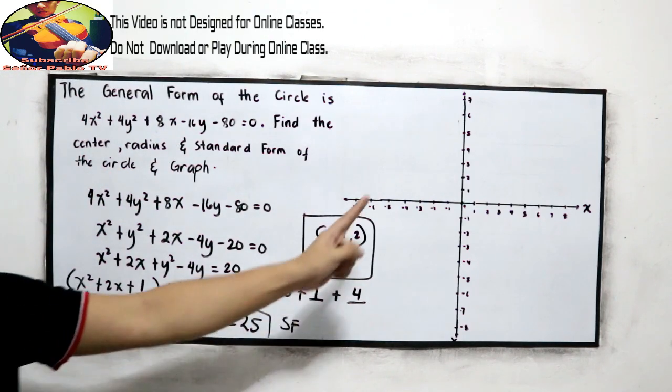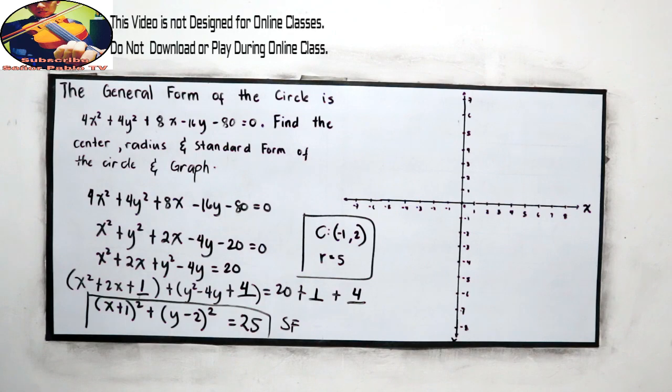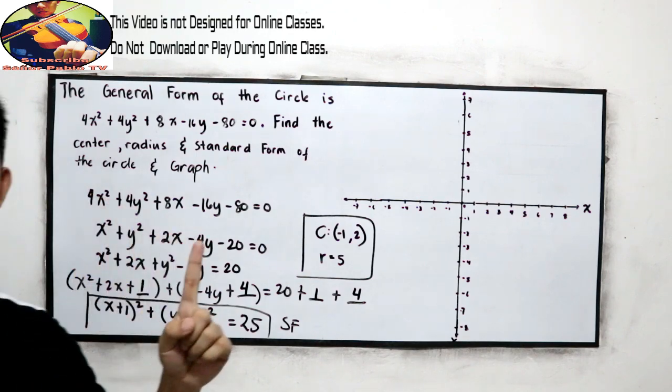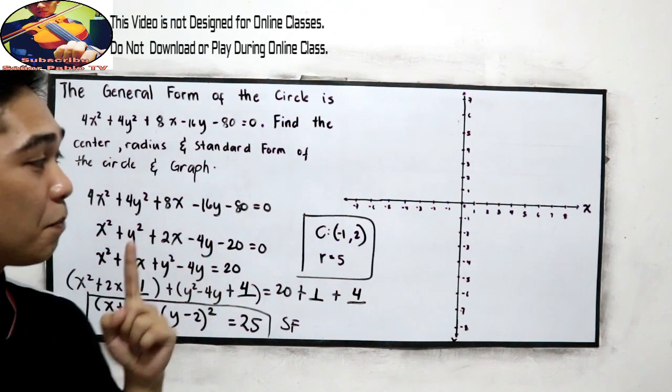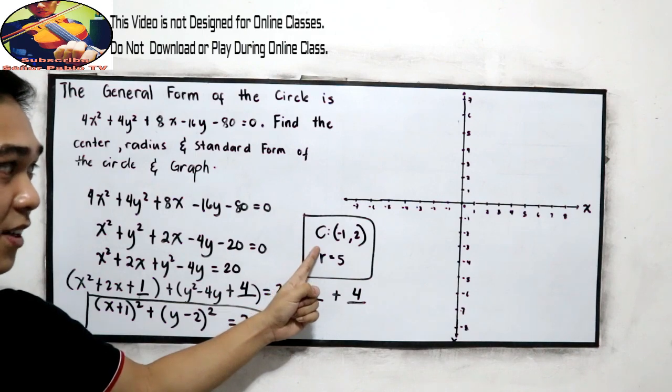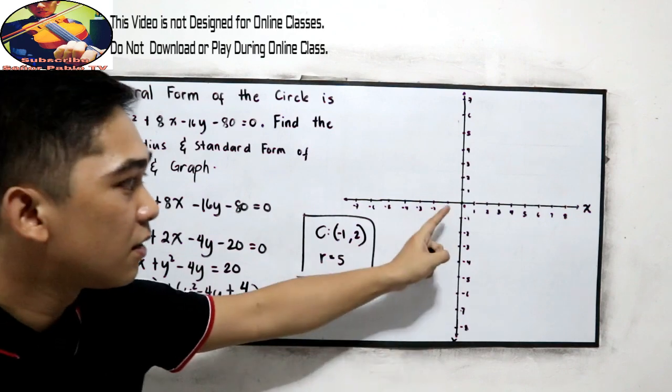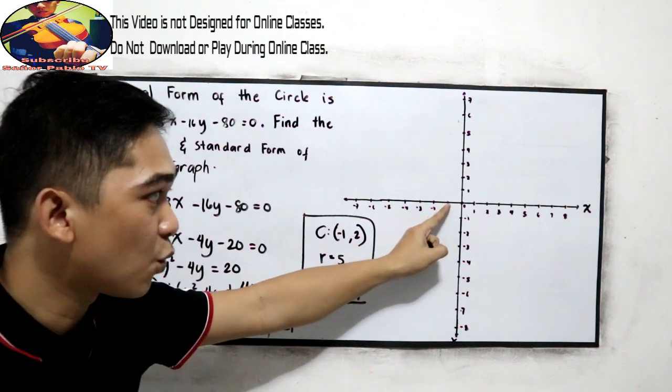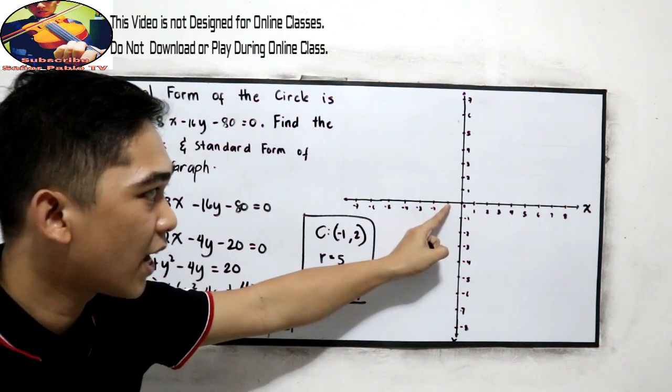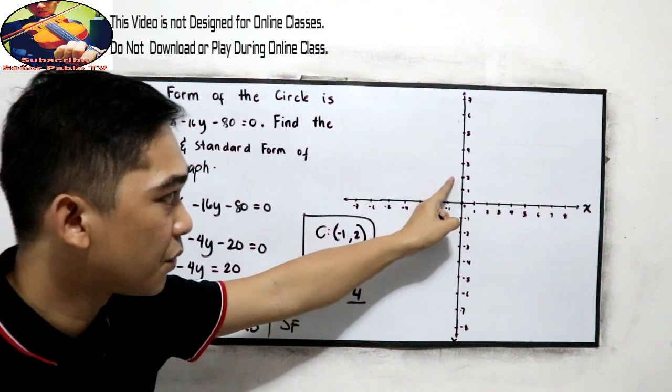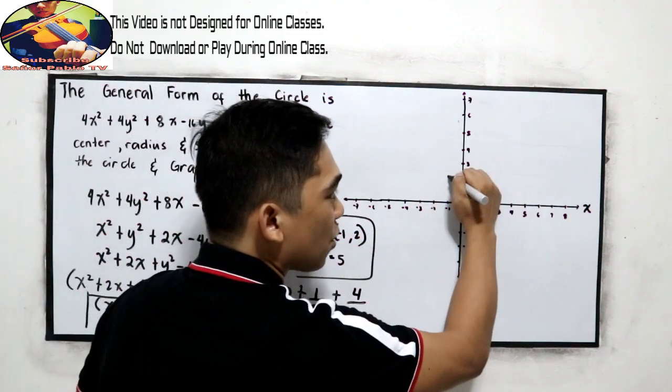Now, let us graph in our Cartesian plane. To graph, first, plot our center. Our center is negative 1, positive 2. Where is negative 1? Negative 1 for x and positive 2 for y. So, this is our center.